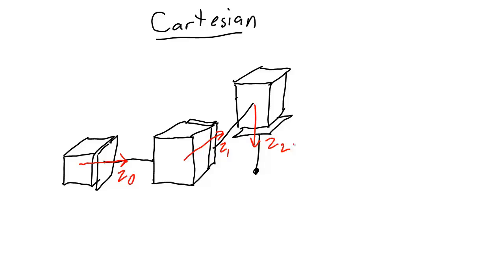I also need a coordinate frame on my end effector. The end effector coordinate frame will just be the same as the coordinate frame that came before, so z3 will be pointing down.